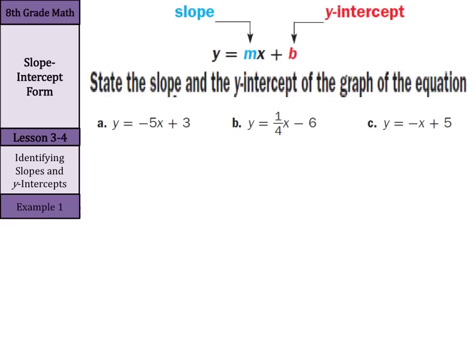I love the slope-intercept form of the line — it is really a neat form to use. y equals mx plus b, where m is our slope and b is our y-intercept. We can use this form to just look at the equation and say, this is my slope and this is my y-intercept. Eventually, once you know the slope and y-intercept, we can actually go and graph these things. Let's try to identify our slopes first.